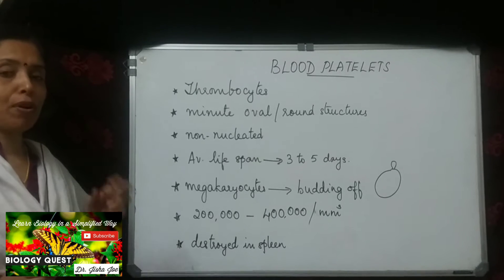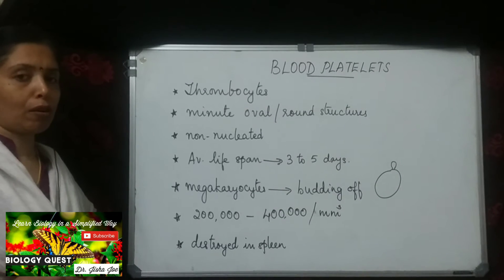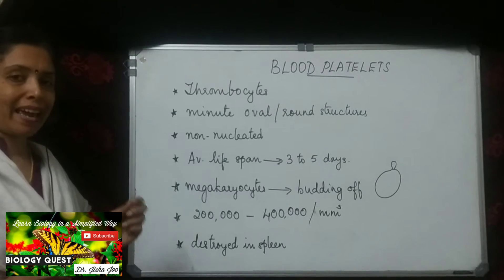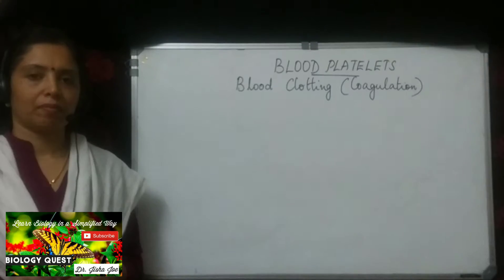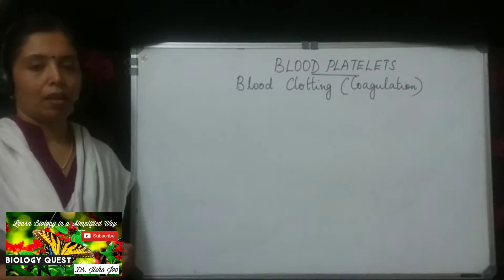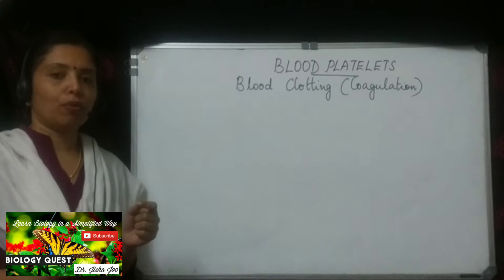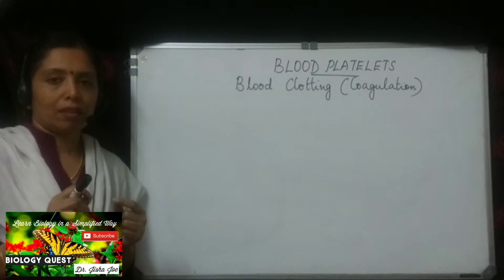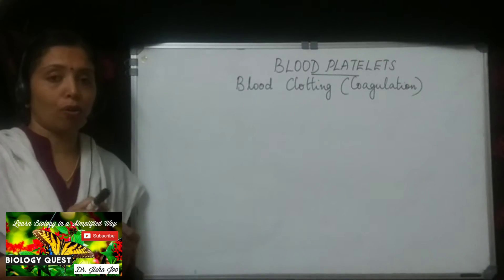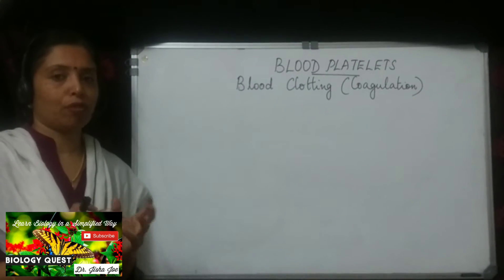The most important function of blood platelets is that they are concerned with blood clotting. We shall now look at how blood platelets help in the process of blood clotting and the steps involved. A clot forms when there is an injury or a wound — blood flows out through the cut, and after a few minutes a clot will be formed at the cut region.